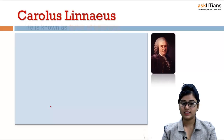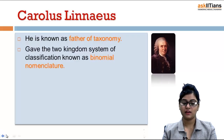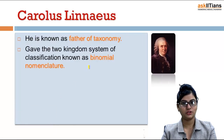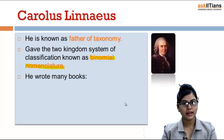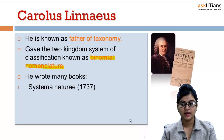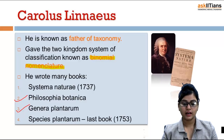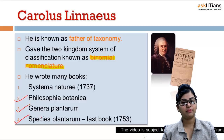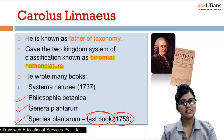Carolus Linnaeus is the father of taxonomy. He gave the most popular system of nomenclature used today — that is the binomial nomenclature. He wrote many books. The first one was Systema Natura, written in 1737. Then he wrote Philosophia Botanica, Genera Plantarum, and Species Plantarum. Species Plantarum was his last book, written in the year 1753.